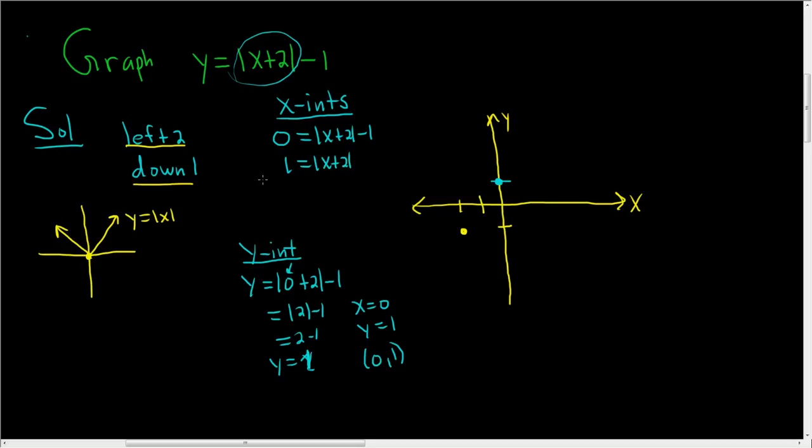For clarity, I'm going to write this as the absolute value of x plus 2 is equal to 1. Whenever you have an absolute value and you want to get rid of it, you have to put a plus or a minus. So here you get x plus 2 equals 1 or x plus 2 equals negative 1. Then you subtract 2, so you get x equals negative 1. And you subtract 2 here, and so you get x equals negative 3.